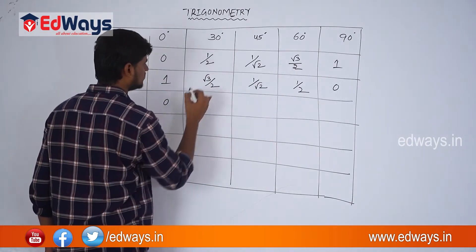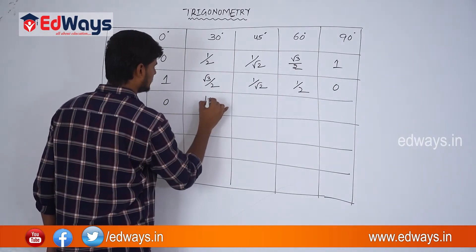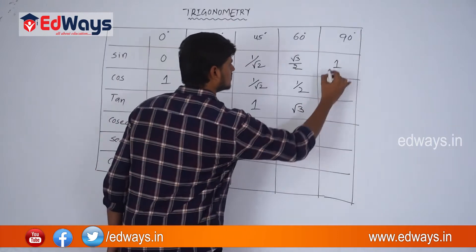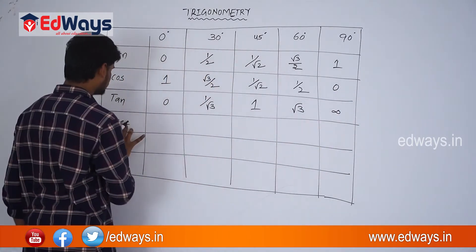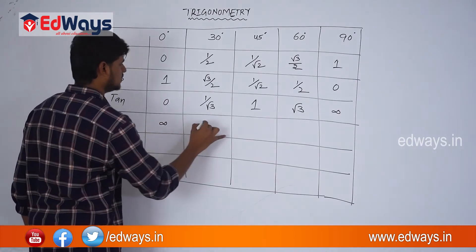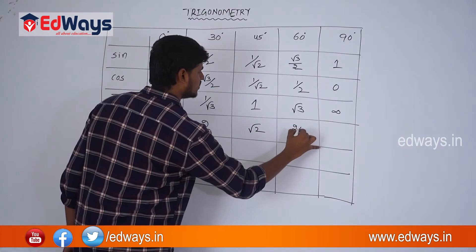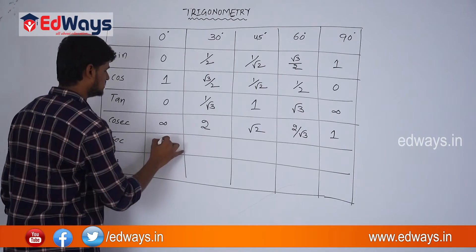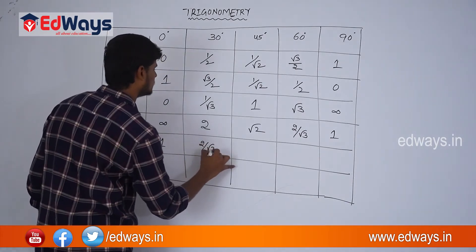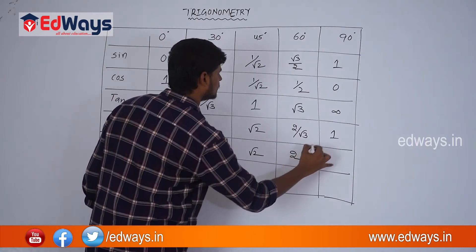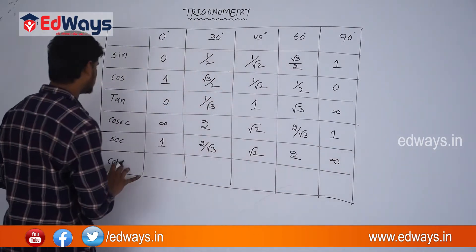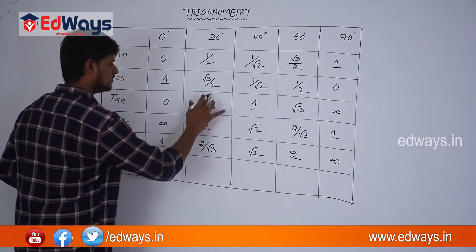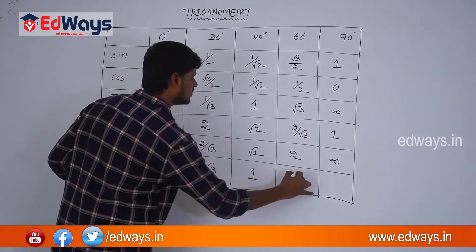Tan 30° is 1/√3, tan 45° is 1, tan 60° is √3, and tan 90° is infinity. Then cosecant values: cosec 0° is infinity, cosec 30° is 2, cosec 45° is √2, cosec 60° is 2/√3, cosec 90° is 1. Secant: sec 0° is 1, sec 30° is 2/√3, sec 45° is √2, sec 60° is 2, sec 90° is infinity. Cot: cot 0° is infinity, cot 30° is √3, cot 45° is 1, cot 60° is 1/√3, cot 90° is 0.